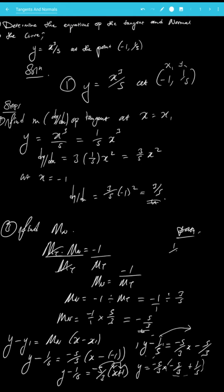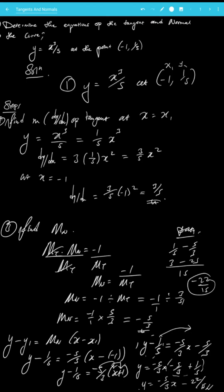Combining the constants: 1/5 - 5/3 with common denominator 15 gives 3/15 - 25/15 = -22/15. Therefore y = (-5/3)x - 22/15, and that is the equation of the normal.